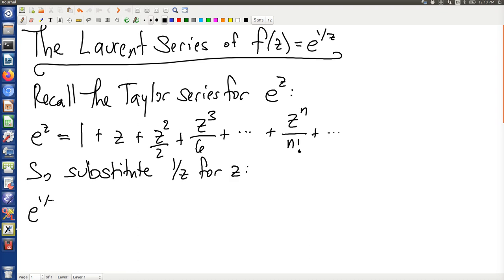So e to the 1 over z is simply 1 plus 1 over z plus 1 over 2 z squared plus 1 over 6 z cubed and so on.